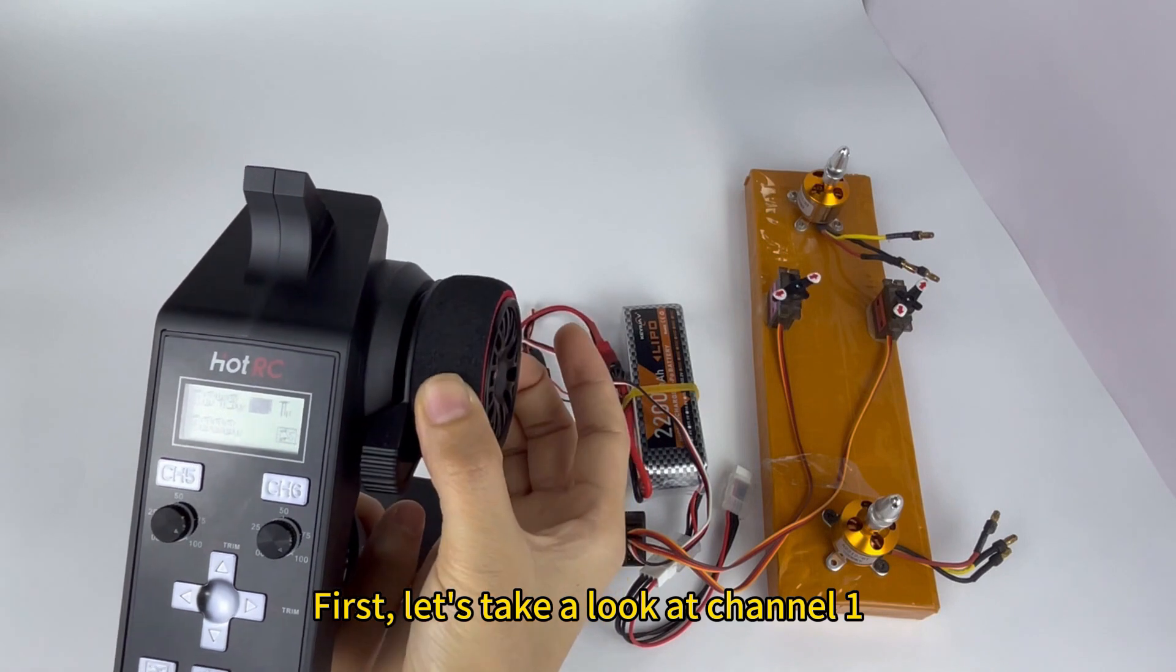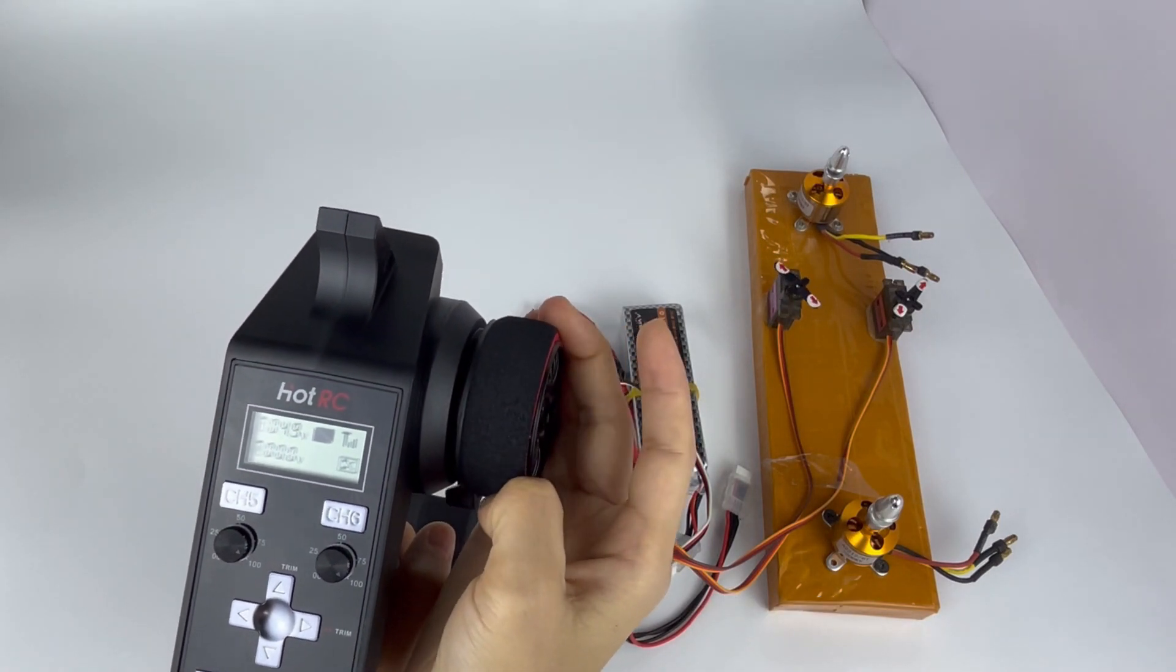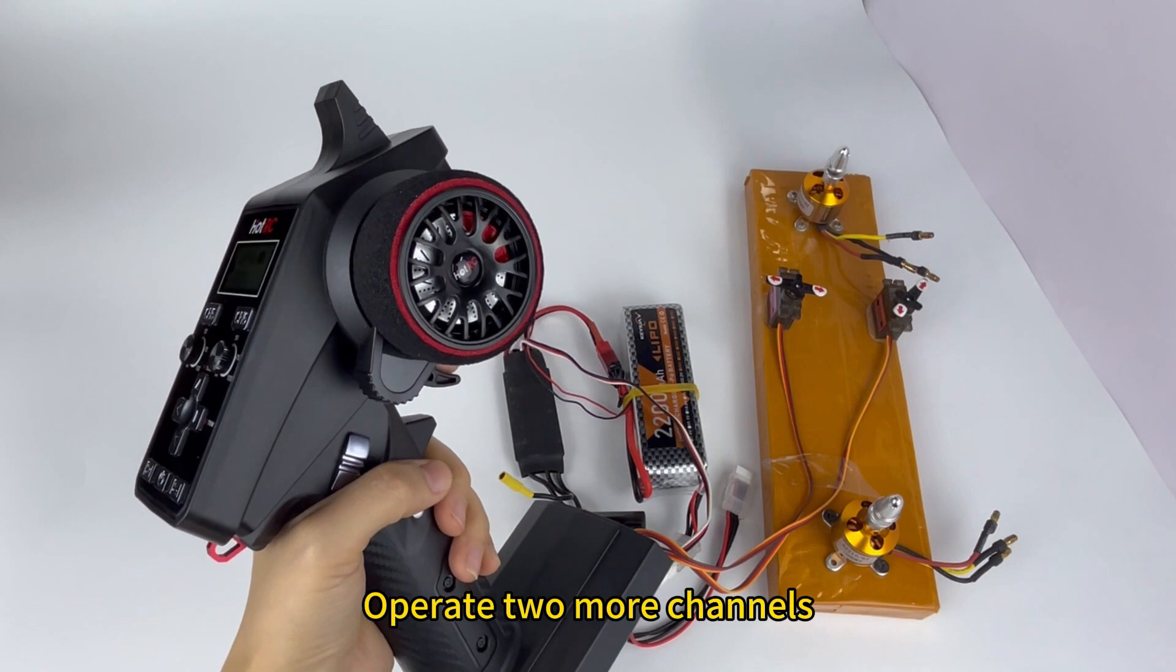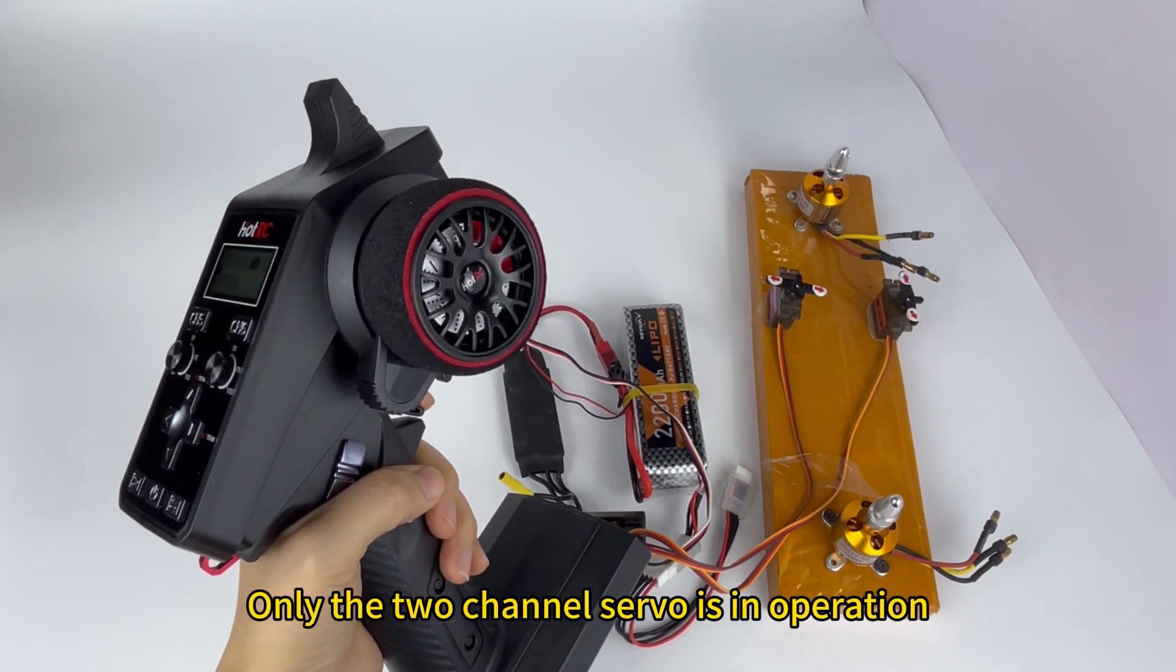First, let's take a look at channel 1. Operating channel 2, only the channel 2 servo is in operation.